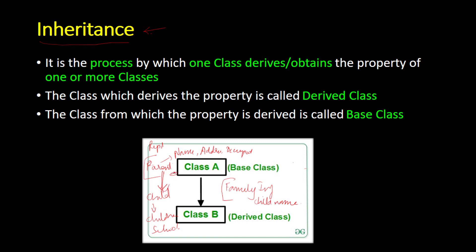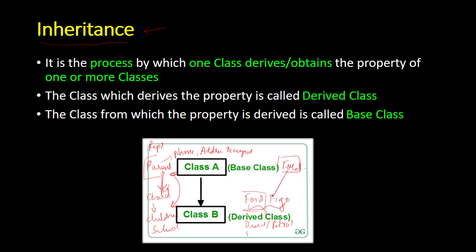This process of deriving details from one class to another is what we call inheritance. For example, for a car called Ford Figo, instead of re-entering Ford company details, you can derive those details from the Ford class into the child class. Ultimately, we are avoiding repetition and reusing information already present. This property of reusing or deriving information from one class to another class is called inheritance.